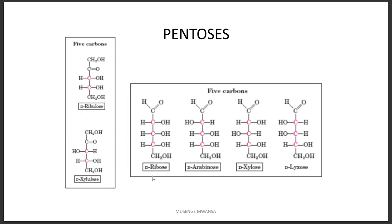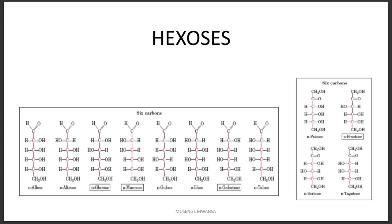We have got pentoses. I want us to take note of ribose, which forms RNA — it's very important in the formation of RNA. So that is a pentose sugar. We are also going to talk about deoxyribose as a sugar derivative. When we remove a hydroxyl from ribose and replace it with only a hydrogen, we form deoxyribose.